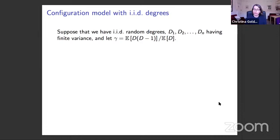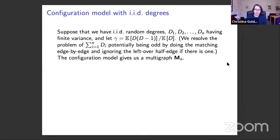We add an extra layer of randomness by taking the degrees d_1 up to d_n to be random variables, IID with finite variance. A key role is played by the parameter gamma, which is the expectation of D times D minus 1 divided by the expectation of D. If the random degrees happen to have an odd sum, we handle that by doing the matching edge by edge and ignoring any leftover half-edge, giving us a random multigraph M_n.